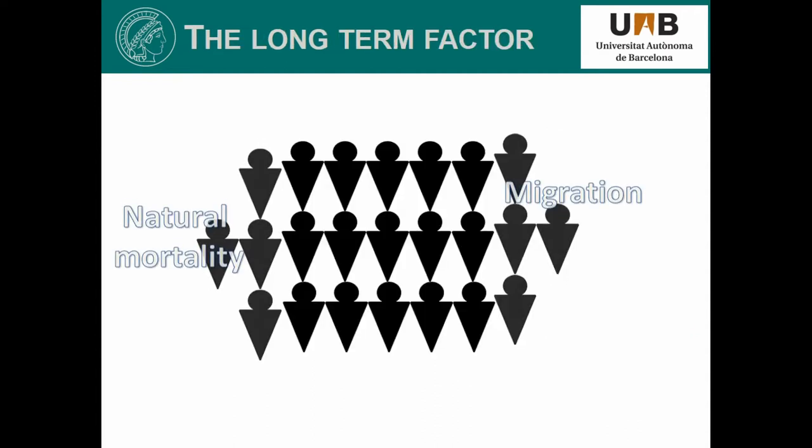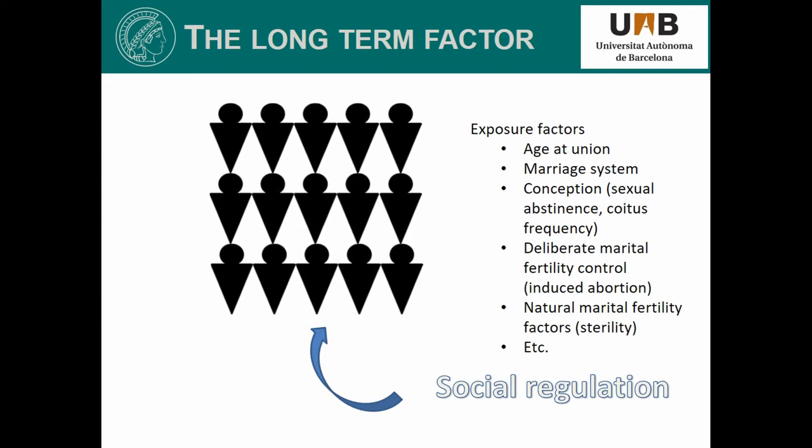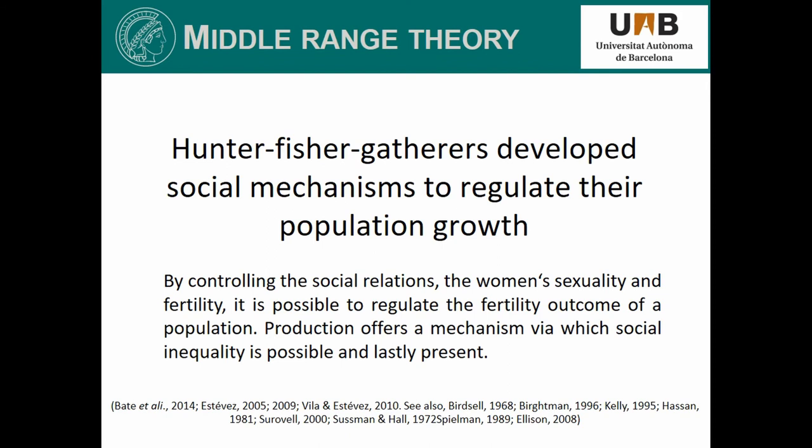Natural mortality and migration movements can release demographic pressure, but the biological capacity of human reproduction is still too high. In the same manner as social organization of labor is unquestionable, a social regulation of human reproduction among Paleolithic societies may also be considered. Reproduction is conditioned by exposure to fertilization, which is for its part conditioned by the relations between sexes, which is socially regulated in any existing human society. By controlling social relations, the woman's sexuality and fertility, it is possible to regulate the fertility outcome of an entire population. The organization of labor would have represented the means through which social relations and behavior were controlled.